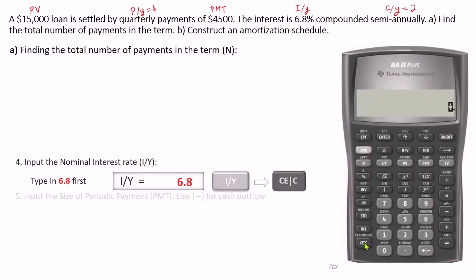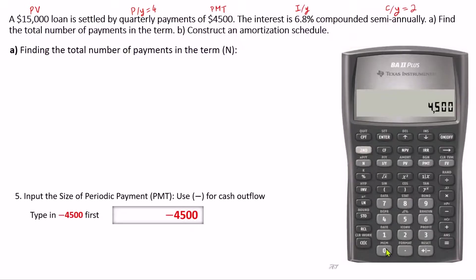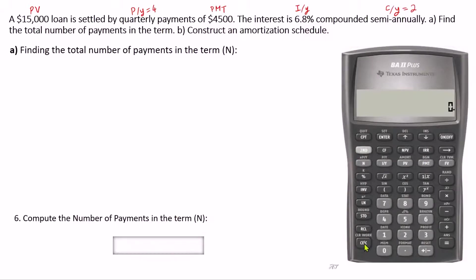We clear. We enter the size of periodic payment, which is $4,500. Please note that in loans, the payments are considered cash outflow and should be entered as a negative number. So we need to use the sign key to change it to negative and then press PMT. Now we clear and finally compute the number of payments in the term by pressing CPT and then N.